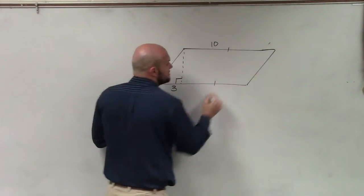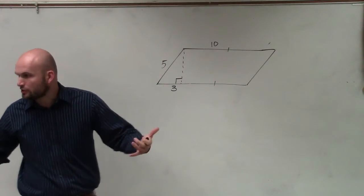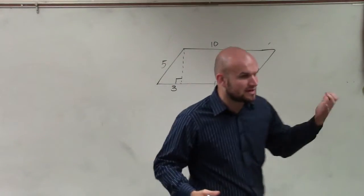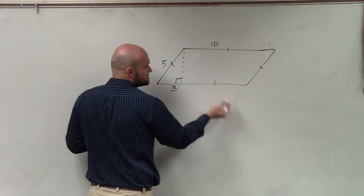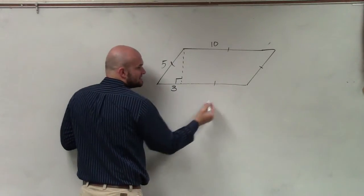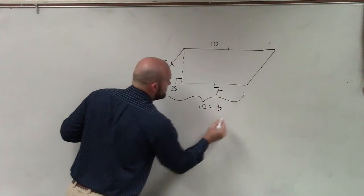Remember, parallelograms have opposite sides that are equal. You guys just hopefully remember when we went over the properties of parallelograms? Opposite sides of parallelograms are equal. So we can say that's ten. So if that's three and the whole side is ten, you could say that's seven, and the whole side is ten, which equals the base.